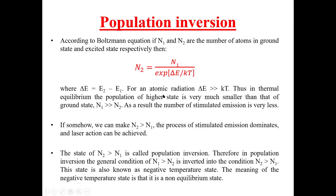Furthermore, for atomic radiation, ΔE is very much greater than kT, where k is Boltzmann's constant and T is absolute temperature. Thus, in thermal equilibrium, the population of the higher energy state is very much smaller than that of the ground state. As a result, the number of stimulated emissions is very low, because to have stimulated emission, electrons must be in the excited energy state.